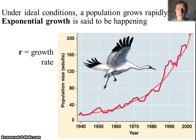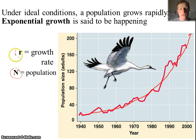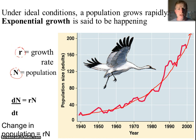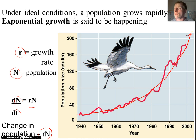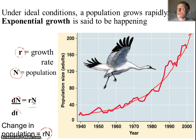Why did this population grow at an exponential rate? If R is the growth rate and N is the population, every year that population is going to increase by R times N. So the change in population over the change in time is impacted by what the population is. When we had maybe 15 or 20 individuals and a growth rate of 0.1, that's a pretty small number added every year. When we get to a population of 200 with a growth rate of 0.1, that's 20 cranes added to the population every year — a much greater increase. The total increase depends on the population size.